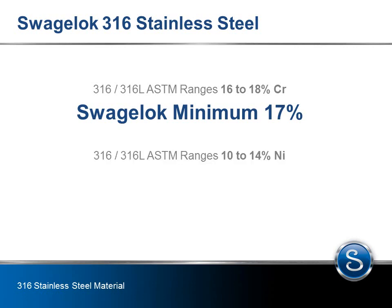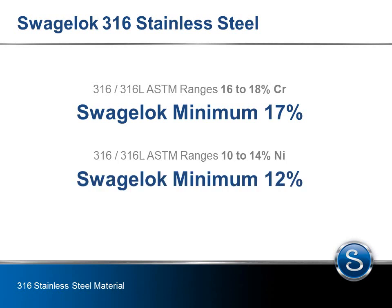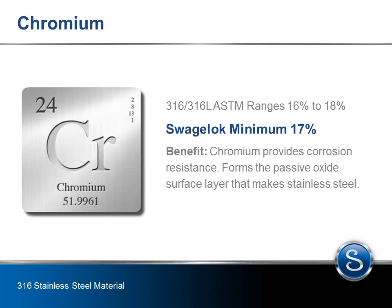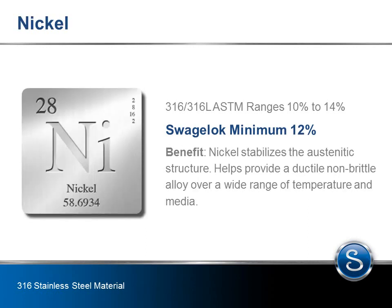ASTM states that nickel levels in stainless steel range between 10% to 14%. Once again, we have seen an industry trend toward the minimum of 10%, but Swagelok has held its minimum nickel range at 12%. The benefit of having an abundance of chromium is to provide the necessary corrosion resistance needed in many applications. Nickel stabilizes the austenitic structure of stainless steel and helps provide a more ductile, non-brittle material, especially across a wider range of temperatures and system media.